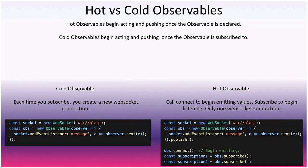Hot versus cold observables: hot observables begin acting as soon as the observable is declared, though you'll rarely see them. Cold observables — the most common type — begin acting and pushing once subscribed. For example, a cold observable that sets up a WebSocket creates a new connection each time you subscribe, so a hundred observers would create a hundred WebSocket connections.